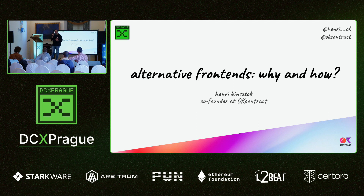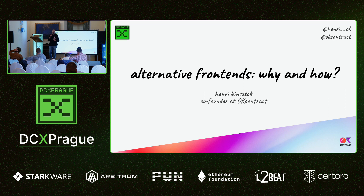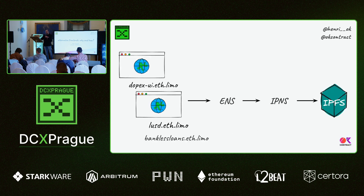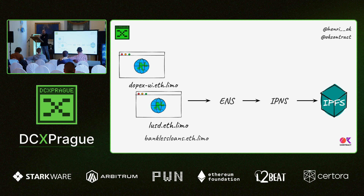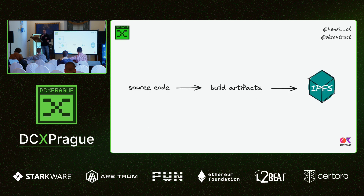Getting back to the title — the original full title was 'alternative frontends and decentralized frontends: why and how.' We shortened it to alternative frontends because every talk we've had until today shows that frontends should be decentralized — that goes without saying. We've seen we can deploy decentralized frontends using if.limo with ENS resolution, then ENS to IPNS to IPFS, giving us a way to ensure that from a domain we are pointing to the right resource. But what's the resource exactly?